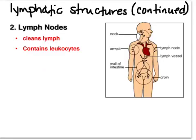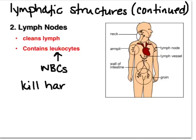Most of you have heard of a lymph node — it's what a doctor feels in your neck when you're sick to see if your nodes are swollen. There are also nodes in your armpit and groin that can swell and be felt on the outside of your body. The nodes' job is to cleanse the lymph by containing leukocytes — white blood cells — that kill bacteria, viruses, parasites, and other harmful substances.